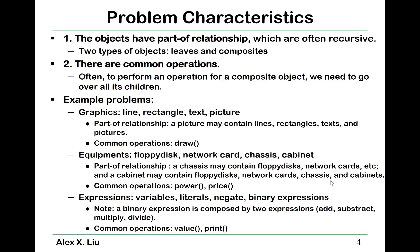For this problem, there are two key characteristics. One is the objects have this part-of relationship — they have this containment relationship — and this containment relationship is often recursive. There are two types of objects in this system: leaves, which do not contain any other objects, and composites, which contain leaves and may also contain composites themselves. Additionally, for these leaves and composites there are common operations, such as print. To perform an operation for a composite object, we need to go over all its children. For example, to print out a picture, you need to go through all its children and print them out.